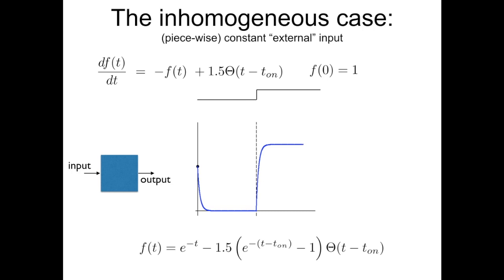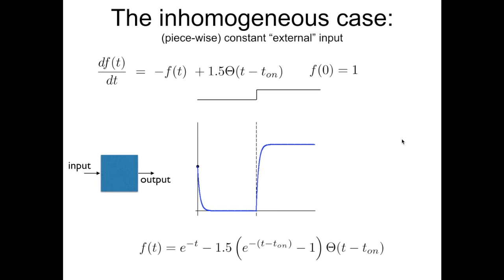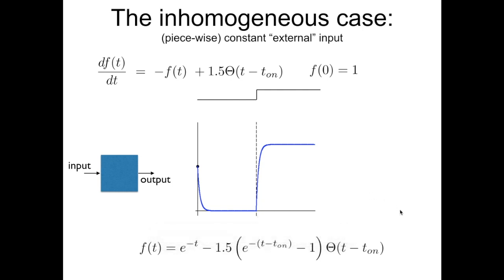We know how to deal with this. We don't know yet how to deal with the step function directly, but if we consider time before t_on and after t_on, we can handle this easily. Before, it's a homogeneous equation. After, it's an equation where the external input, the inhomogeneous term, is a constant — in this case, 1.5. Provided we use appropriate initial conditions, and f(t_on) equals 0 as the new initial condition feeding into the next equation, it's called piecewise constant — the value changes from 0 to 1.5, and we can write the analytical solution.